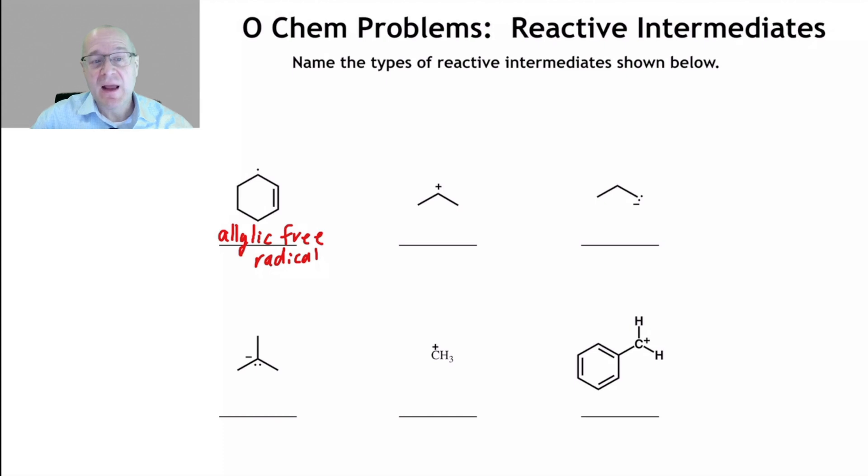Now, if you want to be more specific, you could say it's a secondary allylic free radical, but allylic free radical is what I'm looking for.